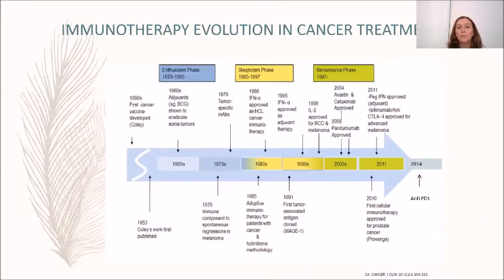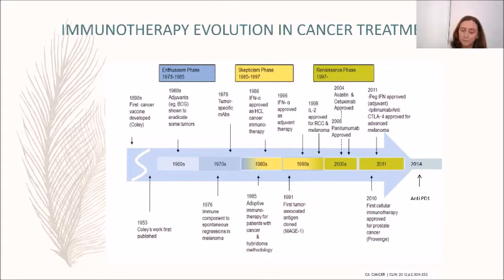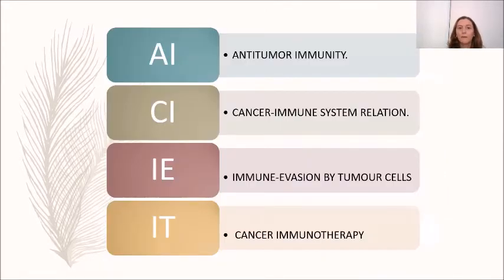This is a slide showing the evolution of immunotherapy in cancer treatment since the first cancer vaccine development by Coley in 1890. There were many years of dormancy until the late 70s and early 80s, when two discoveries — recombinant DNA techniques and the development of monoclonal antibodies — brought immunotherapy back into cancer treatment as we know it today.